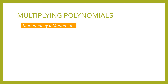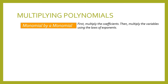Now we start by multiplying a monomial by a monomial. A monomial is a polynomial with only one term. So we have here the rule that we will follow: first, we multiply the coefficients, then multiply the variables using the laws of exponents, which we have learned in our previous lesson.